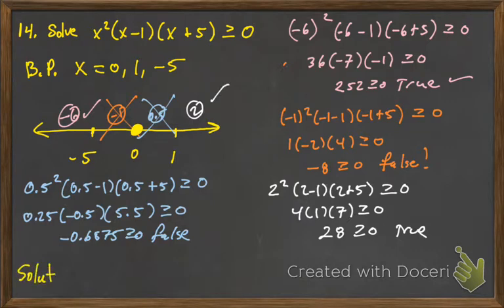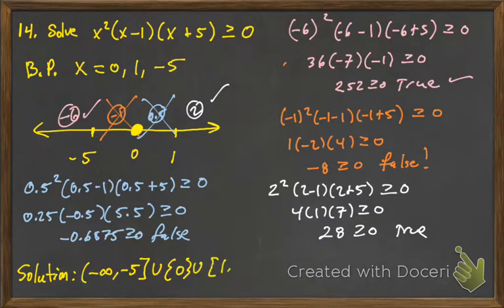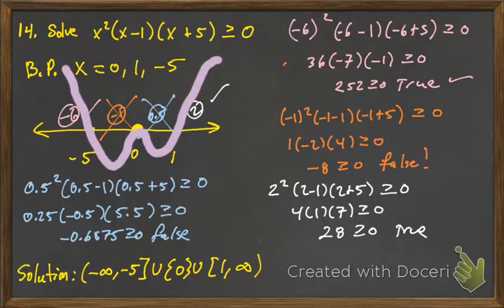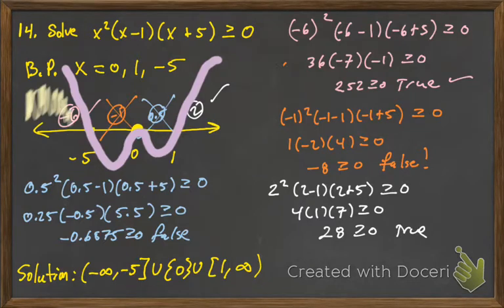So our solution is going to be: since we have a greater than or equal to, we'll use a bracket at negative 5. It is true at 0 and only at 0, so we'll use the curly bracket, and then it's true from 1 to infinity. What the graph looks like — positive is above the x-axis. Greater than or equal to 0 would be above the x-axis or touching it. So we are above the x-axis from negative infinity to negative 5, touching the x-axis at 0, and positive again from 1 to infinity.